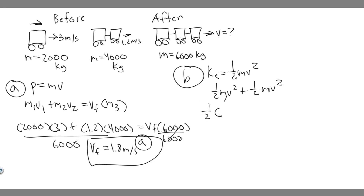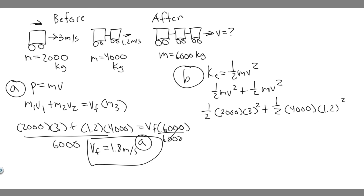We want to find the initial kinetic energy of both objects: ½mv² plus ½mv². So plugging in: ½ times 2,000 times 3² plus ½ times 4,000 times 1.2². When you do this calculation — 0.5×2,000×9 plus 0.5×4,000×1.44 — you get 11,880 joules.